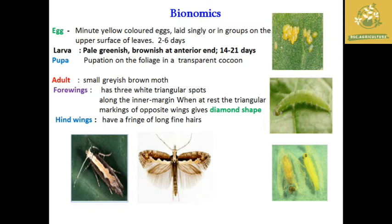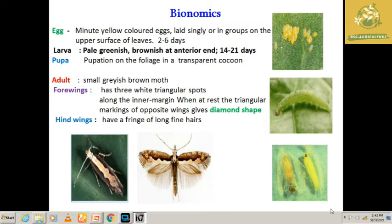The pupa undergoes pupation in a transparent cocoon — you can see in this picture the yellow body covered with a whitish transparent cocoon. The adult is a small grayish-black moth showing diamond-shaped markings with fringed wings bearing long hair.